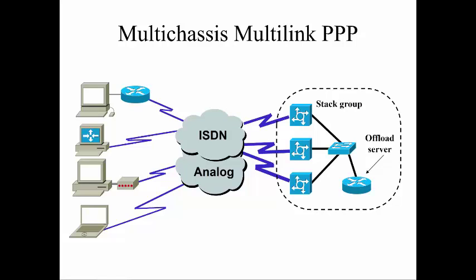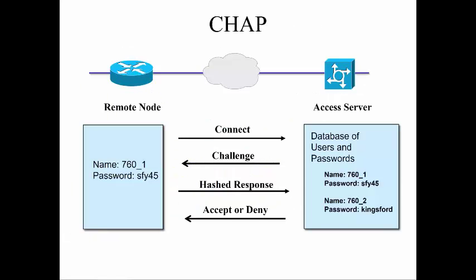Multi-chassis multi-link PPP basically involves multiple chassis that have multiple links using PPP, and that could be to connect to both a digital and analog network. As for how CHAP works: we have a connect, a challenge, a hash response, and an accept or deny response. This is a basic CHAP handshake, and most of this is sent via plain text, so CHAP has some benefit but a big part of it is insecure.